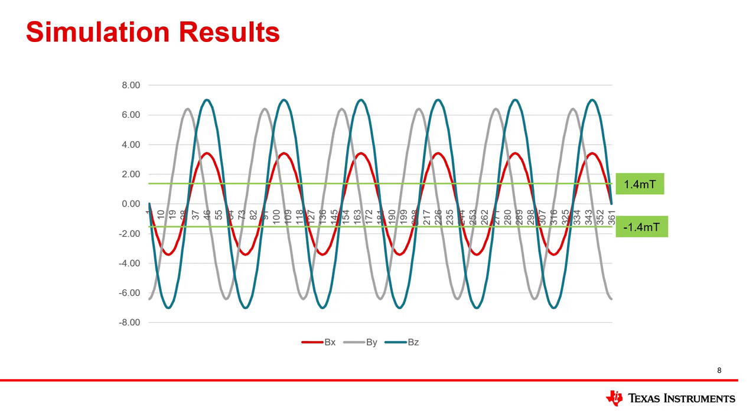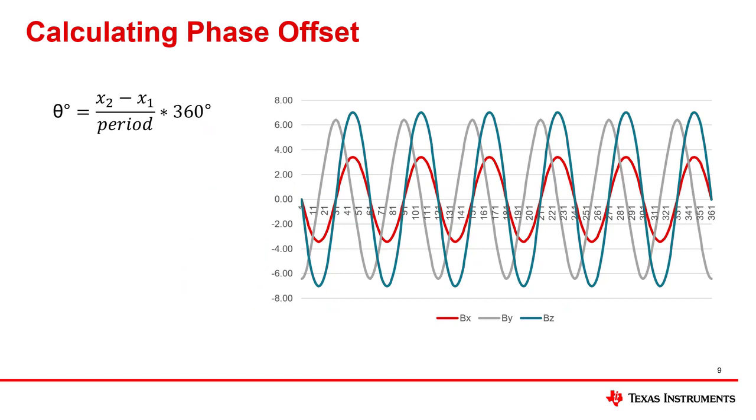In order to select the axis of sensitivity, we must recall that this application requires quadrature, indicating that there should be a 90 degree phase offset between two signals. Using the simulation results, it is possible to calculate the estimated phase offset between two signals by using a point off of each waveform. Using the formula, theta equals x2 minus x1 divided by the period times 360 degrees, where x2 and x1 represent a point sample on the plot, and the period is the number of samples it takes the signal to complete one cycle.